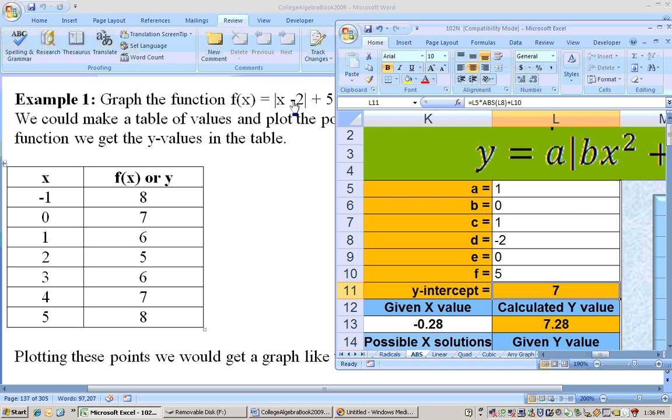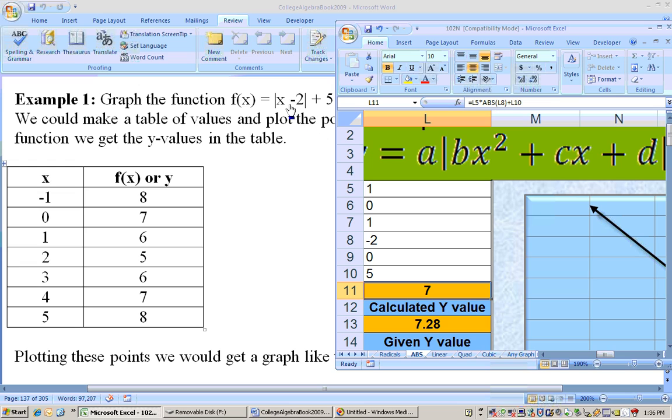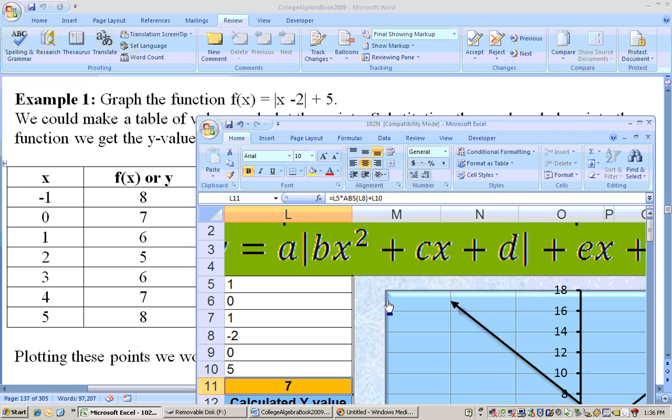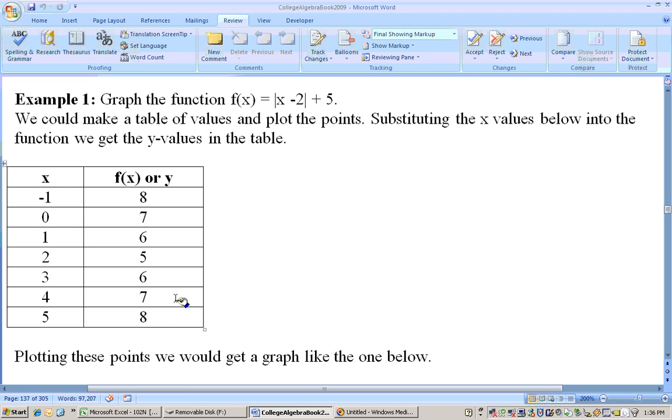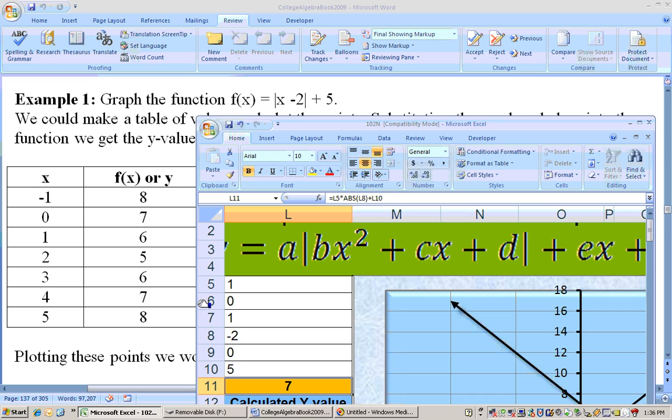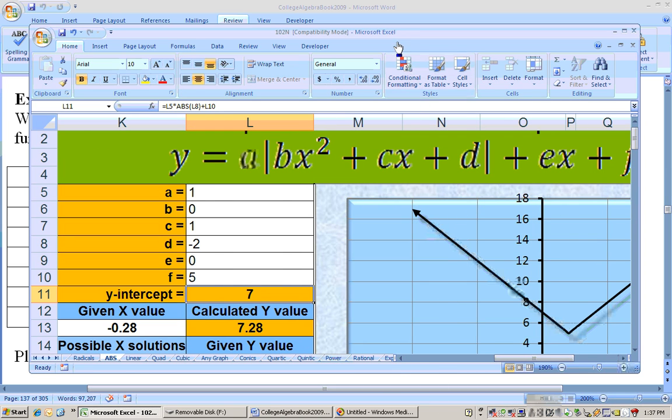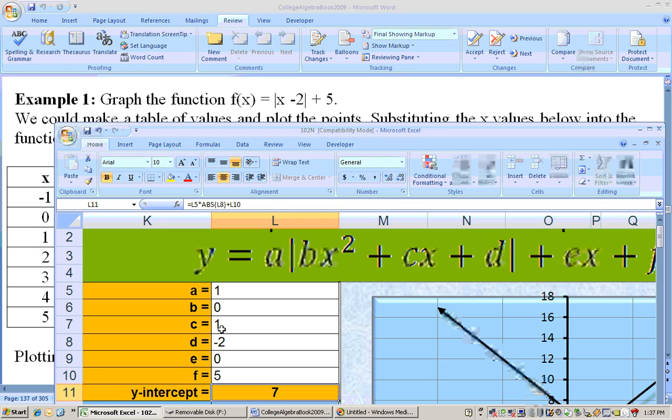And on this actual equation that we're dealing with, the a is 1. The number in front of the whole absolute value would be 1. We have one of these absolute values. The b, the bx squared, there is no x squared. So that'd be 0. The number in front of the x, the c, would be 1. The d is minus 2. The e is the number beside the x outside of the absolute value, which there is none, so that'd be 0. And then the f over here is a constant, so that'd be 5.